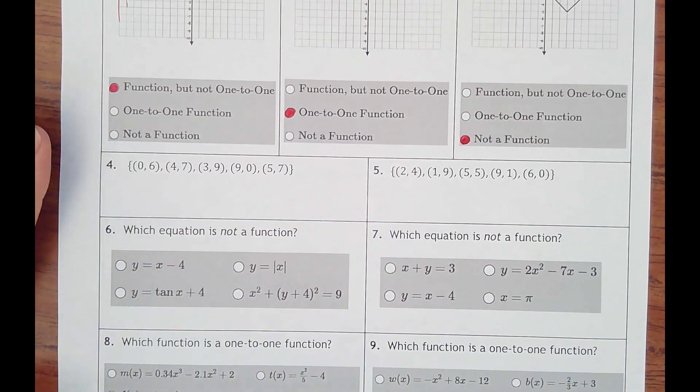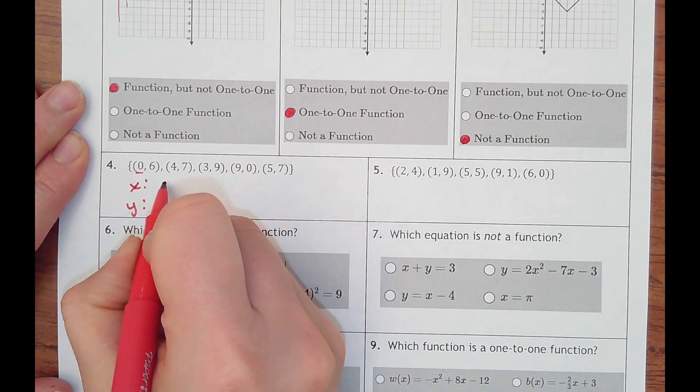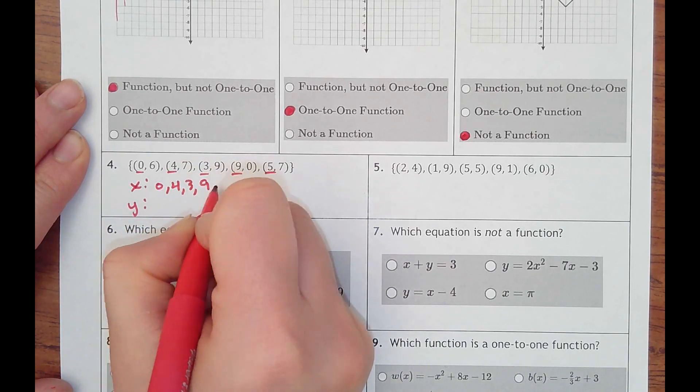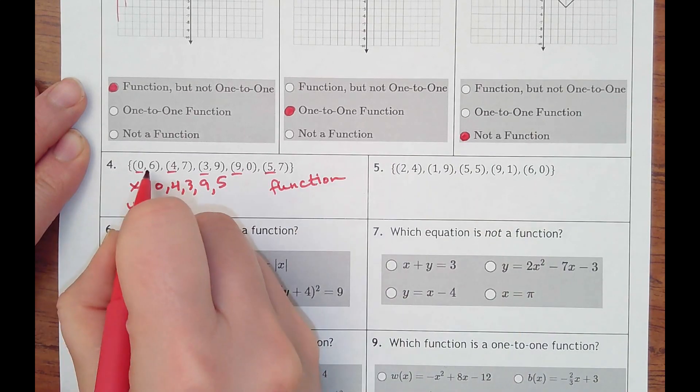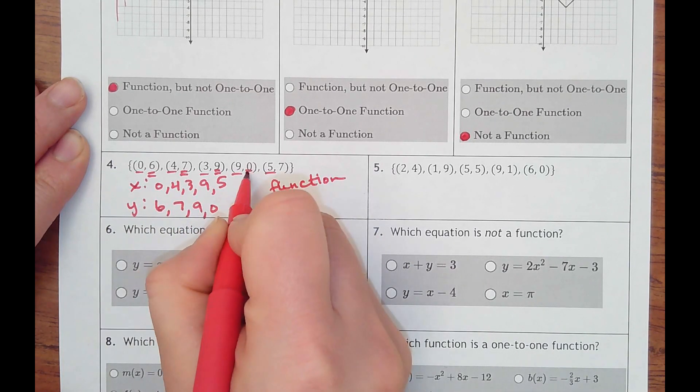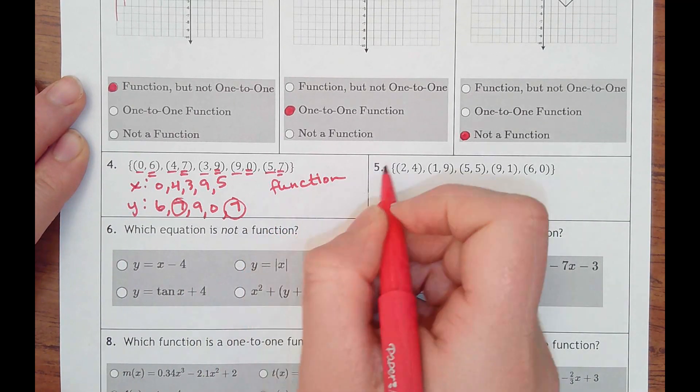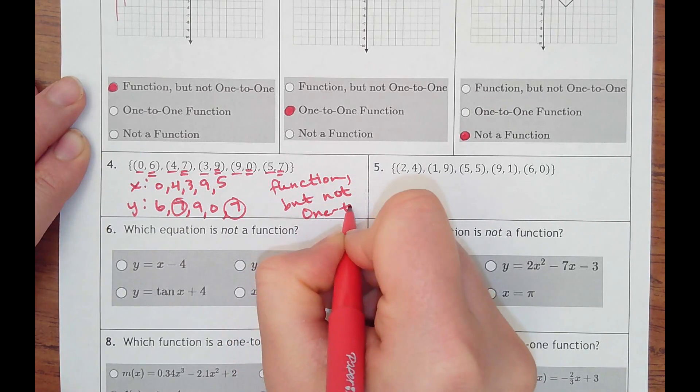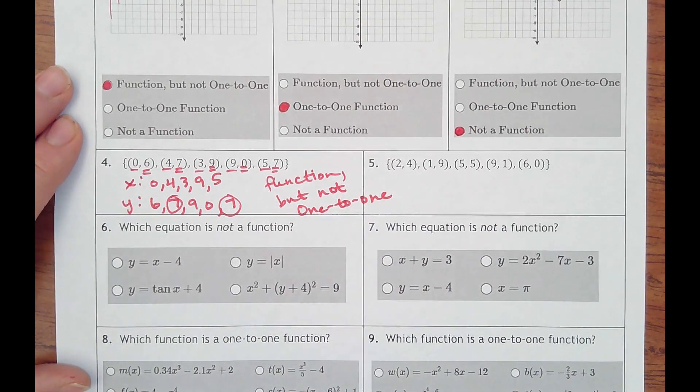For number 4 are pairs. You want to look at your x values, and you want to look at your y values, and nothing should repeat. So my x values are 0, 4, 3, 9, 5. That makes it a function, for sure. And then my y values are 6, 7, 9, 0, 7. I see a 7 occurring twice, so that means it's not one-to-one. So it is a function, because no x's repeat, but it's not one-to-one because the y value repeats.